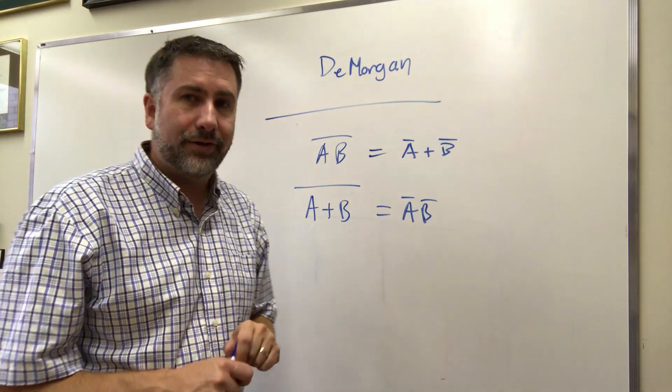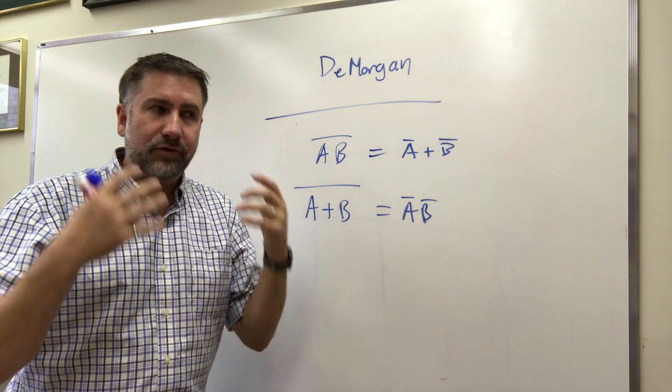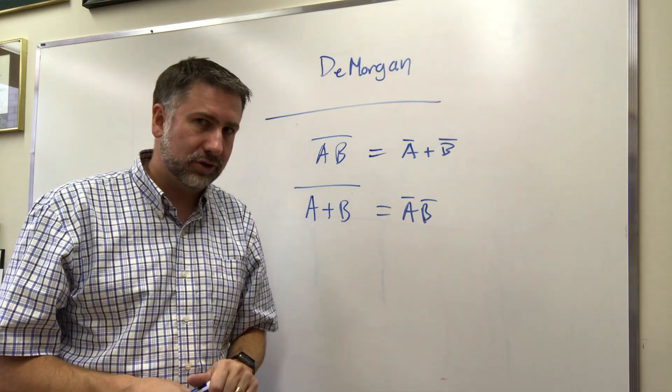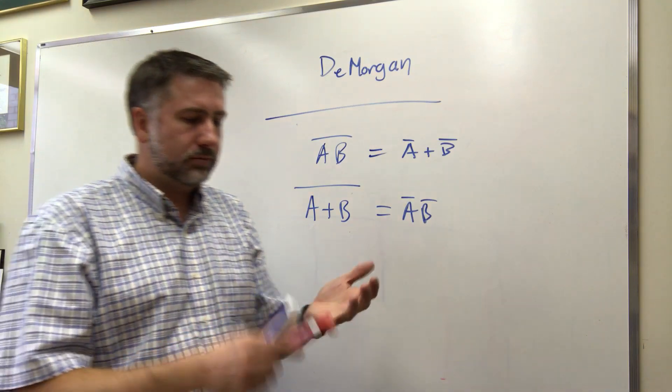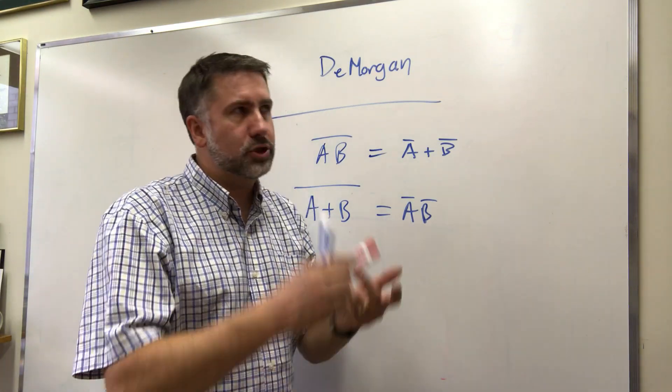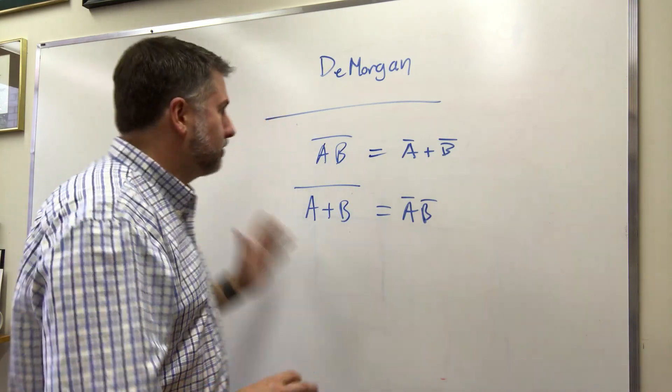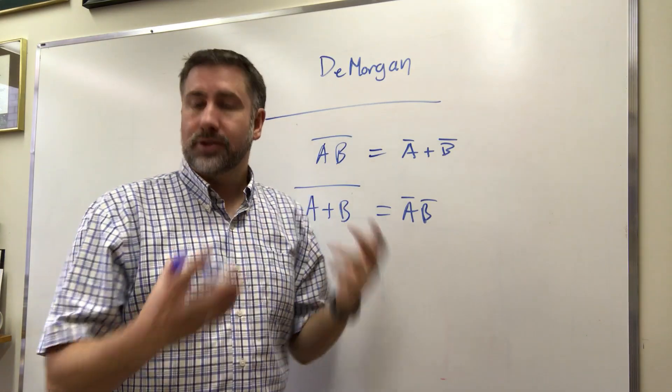De Morgan is going to be very useful in this kind of thing as well. So that's the entire list of functional identities that we can use to simplify functions. So if we say commutative, distributive, associative, De Morgan, idempotent, absorption, inverse, identity, ones and zeros - those are the different things that we can use to take an expression and make it simpler.